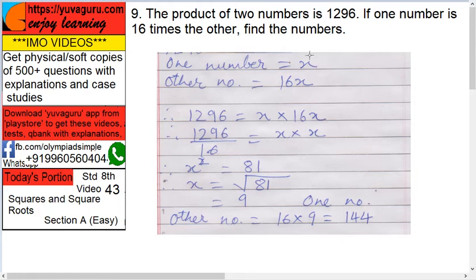One number equals x, so the other number is 16 times the first one, so 16x. The product is 16x into x, but what is given? It is 1296, so 16x into x equals 1296.